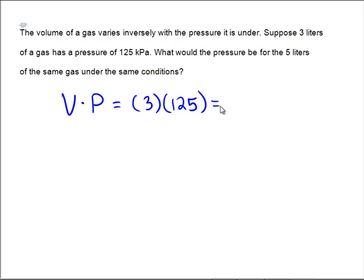What would the pressure be? The pressure is the unknown for a volume of 5. And there's my pressure that's unknown. So 3 times 125 is 375 equals 5p. Then we will divide both sides by 5 to get the number 75.